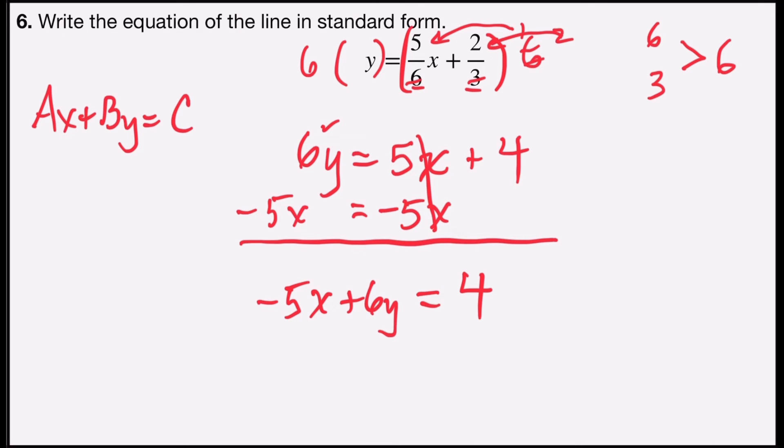So I have no fractions, no decimals. Negative 5, 6, and 4 are integers, however my a term needs to be positive or greater than 0. So I'm going to multiply both sides by negative 1, or divide both sides by negative 1. The result is the same. All signs will reverse.